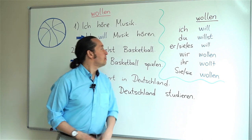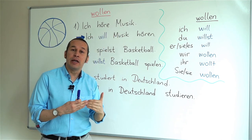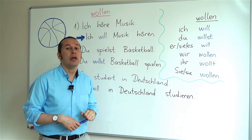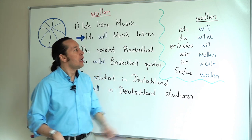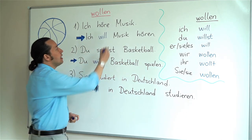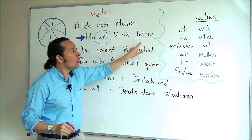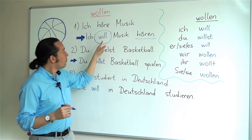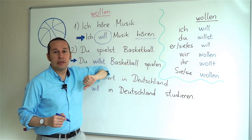Let's practice what we've learned. Ich höre Musik — I listen to music. Hören stands for hearing or listening. What do I do if I want to say 'I want to listen to music'? I'll say ich will Musik hören. Did you notice something? Hören remains the same in the infinitive form. What I conjugate is the modal verb wollen. So: ich will Musik hören — I want to listen to music.